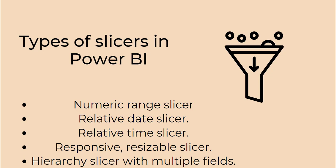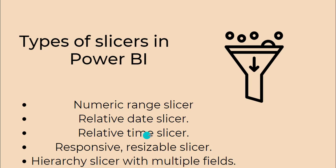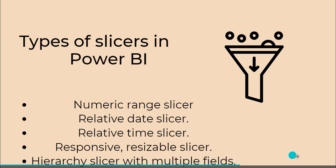Now we will learn what are the different types of Slicers available in Power BI. There are 5 different types: the Numeric Range Slicer, Relative Date Slicer, Relative Time Slicer, Responsive Resizable Slicer, and Hierarchy Slicer with multiple fields. I will show you an example for each one.